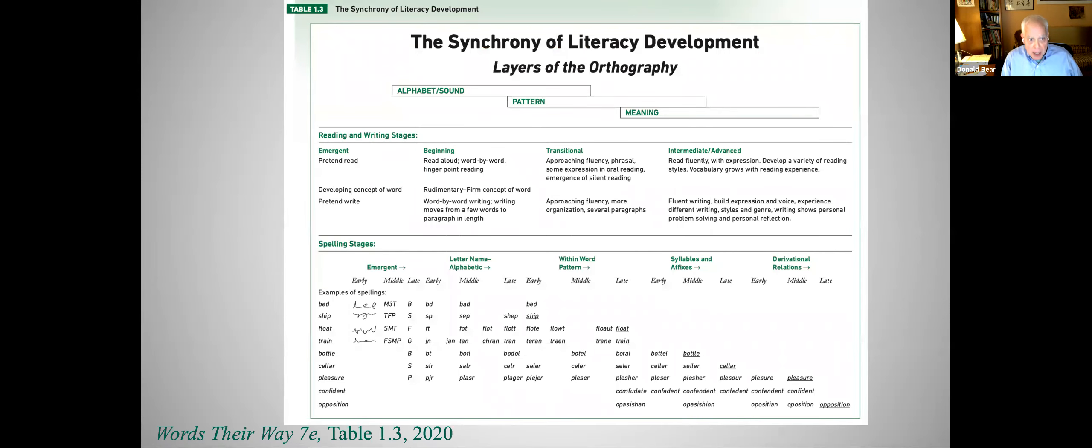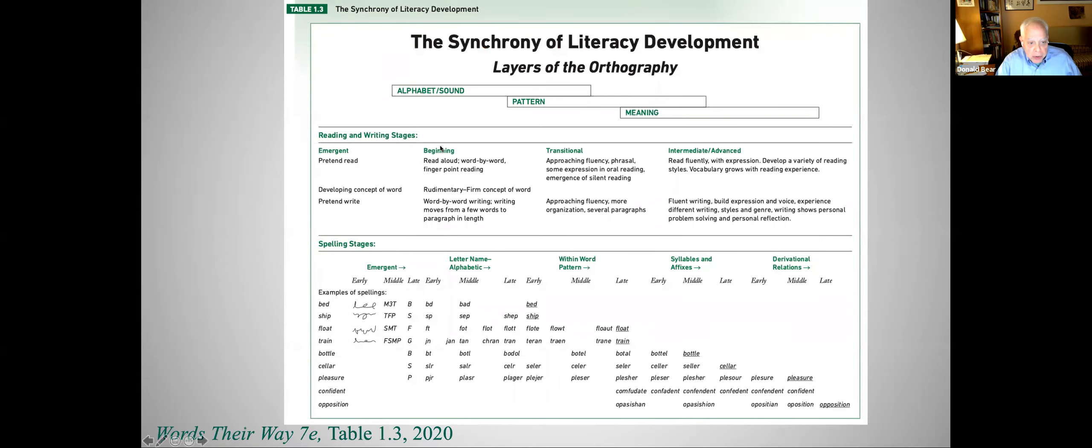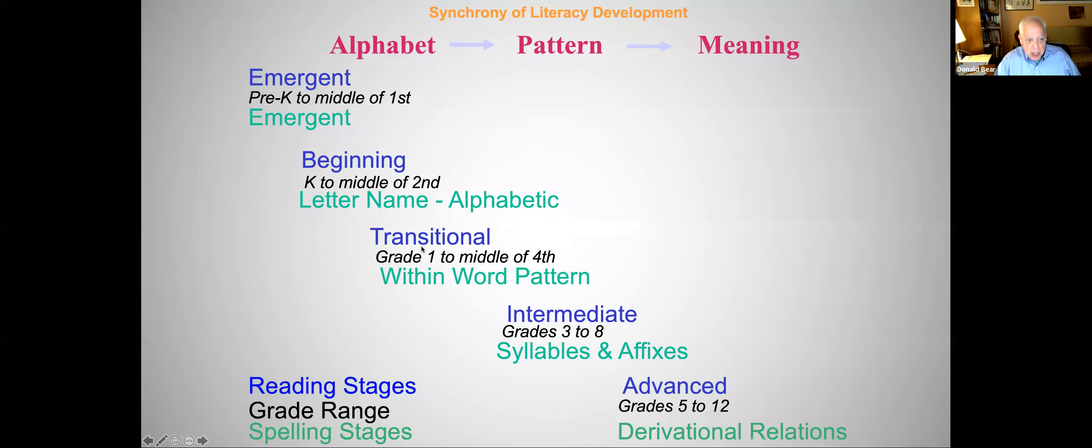At the top, you see that I'm talking about the synchrony of literacy development, how reading, writing, and spelling are interrelated. And so our word study instruction is integrated. And so there are five stages of spelling and five stages of reading. And we've talked about this in our other materials quite a bit. You can see the rough grade level equivalence to these stages.